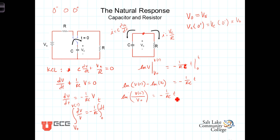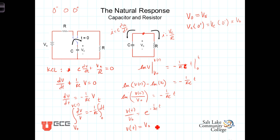We're trying to solve for V of t, which is wrapped up in the log, so we exponentiate both sides. When we do so, we get V of t over V0 equals e to the minus 1 over RC times t. Multiplying both sides by V0, we then have what we were looking for: the voltage across the capacitor as a function of time equals V0 times e to the minus t over RC. This constant RC in the denominator we're going to define as a circuit parameter known as tau, the time constant for the circuit.